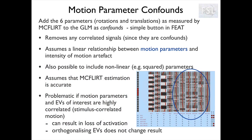The first option is to add motion parameter confounds in our single subject GLM. If you remember the FEAT report, we had three plots with the three rotations and three translations over time that were measured during the realignment step with McFlirt. With a simple button in FEAT, we can add them as confound regressors in our GLM. And if the data can be explained by a linear combination of the motion parameters, then the effect is going to be explained by those regressors and it's not going to end up in our contrast of interest.